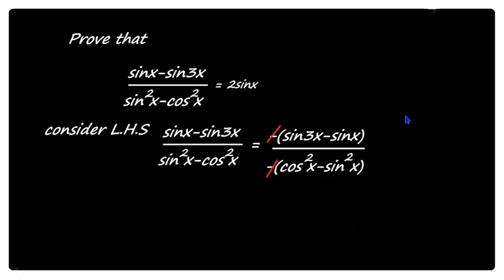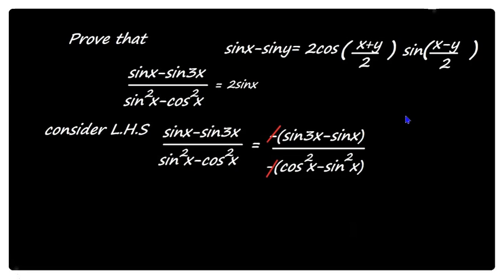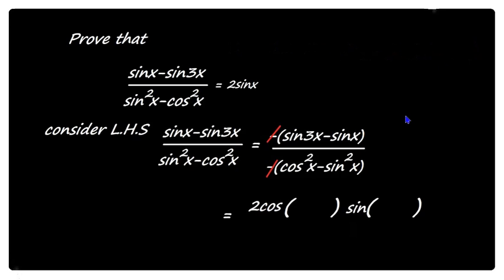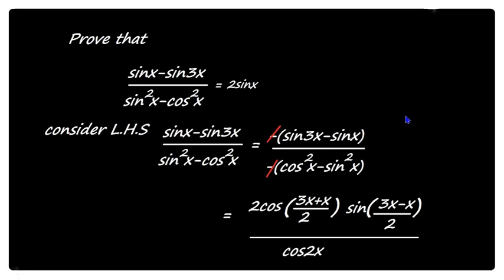Apply the transformation formula in the numerator, which is of the form sin x minus sin y: 2 cos((x+y)/2) into sin((x-y)/2). Here x is 3x and y is x, giving 2 cos((3x+x)/2) into sin((3x-x)/2). The denominator uses the standard formula: cos squared x minus sin squared x equals cos 2x.